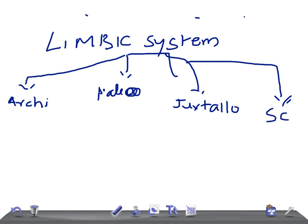The archicortical structure forms allocortex along with the paleocortex. It's the oldest structure and is concerned with memory. Remember, this is really very important—this is for memory.